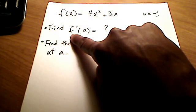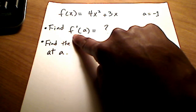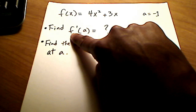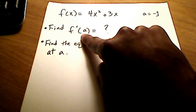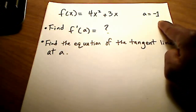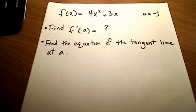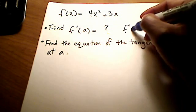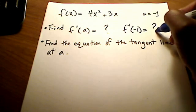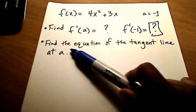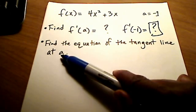They want us to find the first derivative of the function at a. What is the value of the first derivative at a? Well, our a is a negative 1, so we're really trying to find the first derivative at negative 1. And the second thing, too, is we're going to try to find the equation of the tangent line at negative 1.